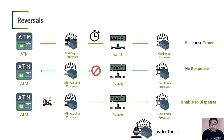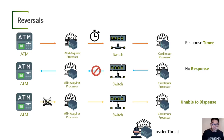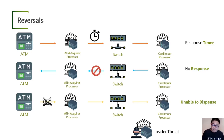A reversal happens in several scenarios. For example, if the ATM sends packets and at some point there is no response — every part of the flow has a timer, so if there is no response, it will time out and a reversal could happen. Another scenario: the card issuer processor responds to the authorization and sends the response back to the ATM, but somewhere in the switch the response doesn't arrive to the ATM — that can also cause a reversal.